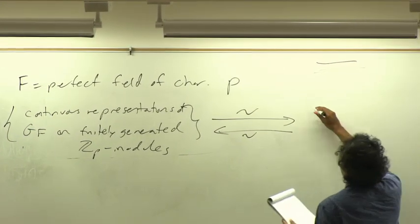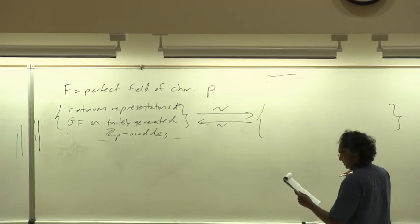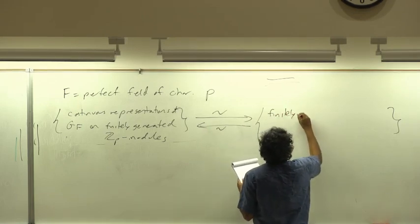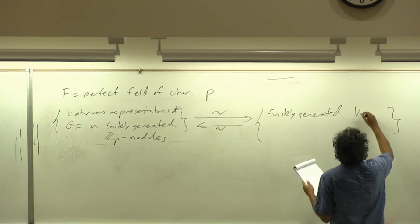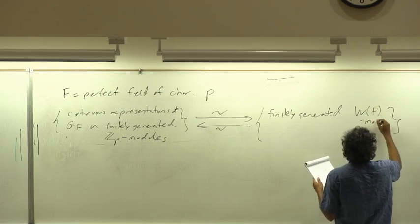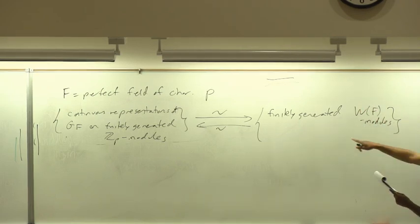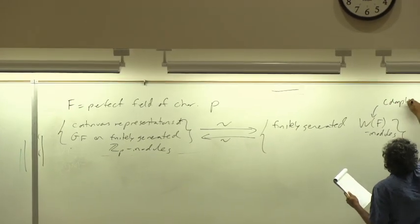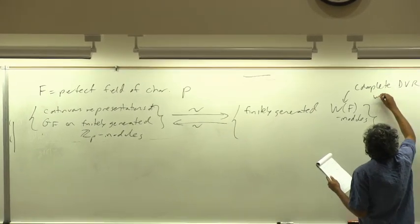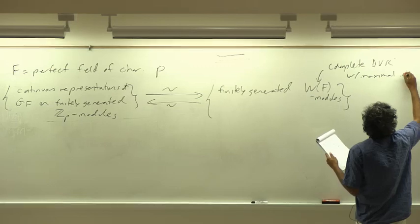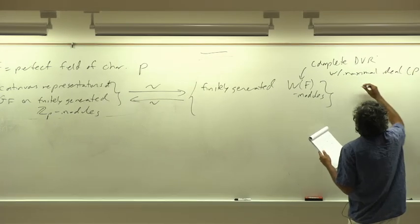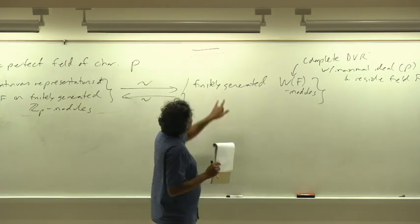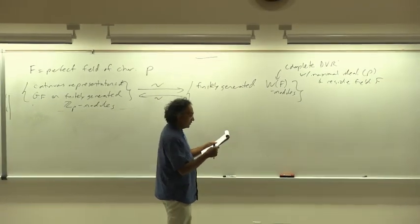The statement — which I think goes back to Katz, though maybe someone can correct me — is that this category is equivalent to finitely generated W(f)-modules. W(f) denotes the ring of Witt vectors. Since f is a perfect field, it lifts uniquely to a complete DVR with maximal ideal generated by p and residue field f. So we're looking at finitely generated modules of that ring.